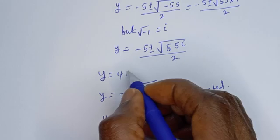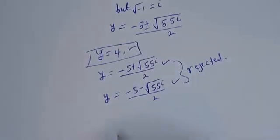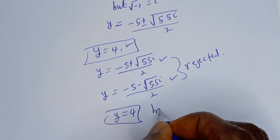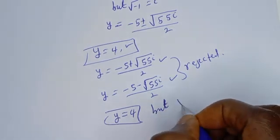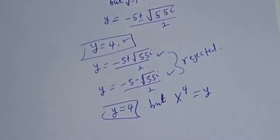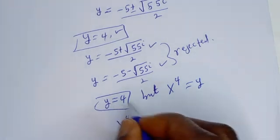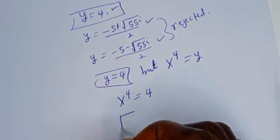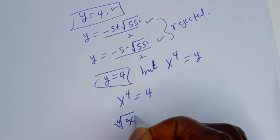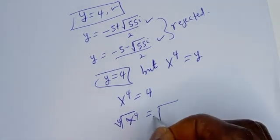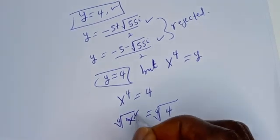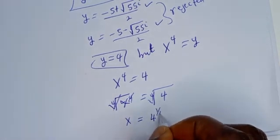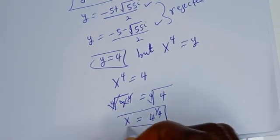The only solution is Y equal to 4. Since S raised to the power of 4 is equal to Y, we have S raised to the power of 4 is equal to 4. Taking the fourth root of both sides, S is equal to 4 raised to the power of 1 over 4. This is the final answer.